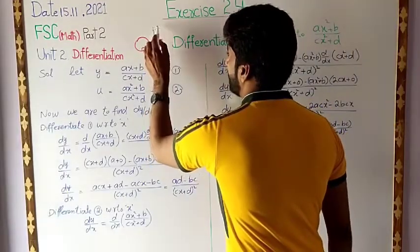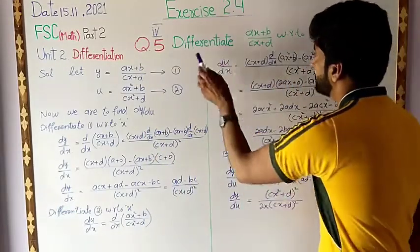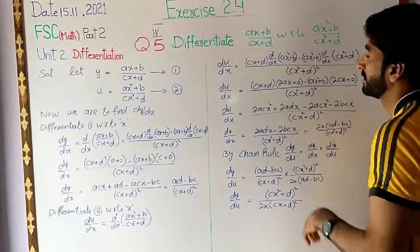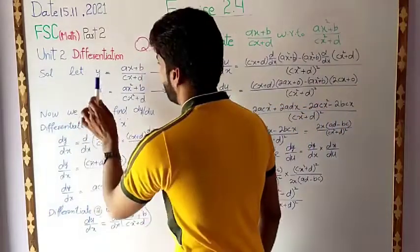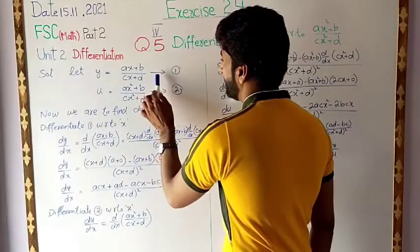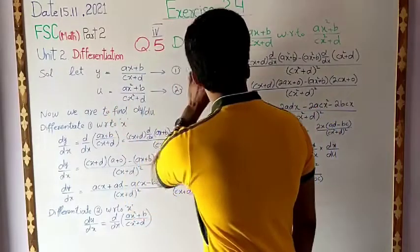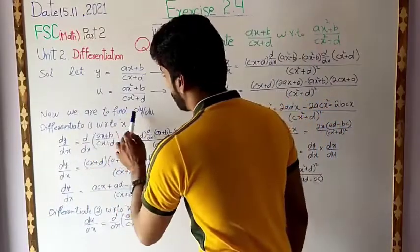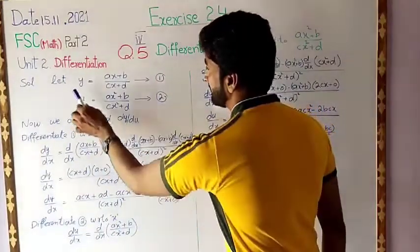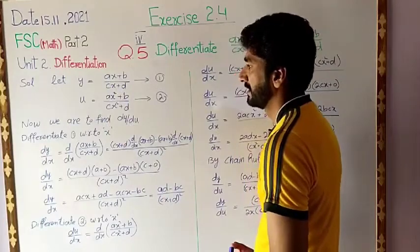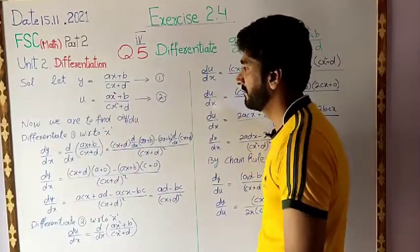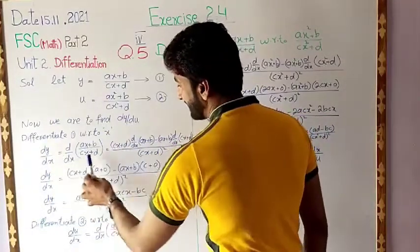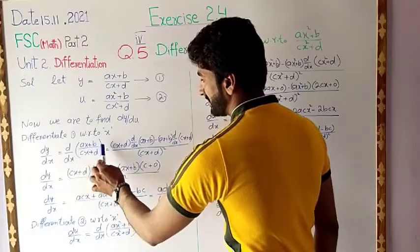Now this is the fourth part of question 5. The statement is: differentiate (ax plus b) over (cx plus d) with respect to (ax square plus b) over (cx square plus d). Both functions are independent. Let y equal to (ax plus b) over (cx plus d) — equation 1. Let u equal to (ax square plus b) over (cx square plus d) — equation 2. We are to find dy over du using the chain rule.